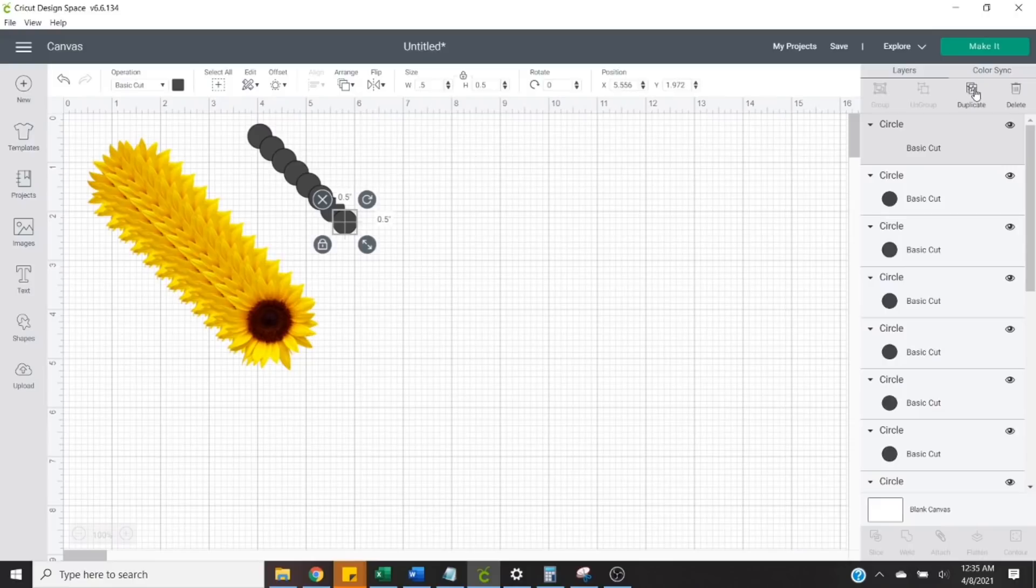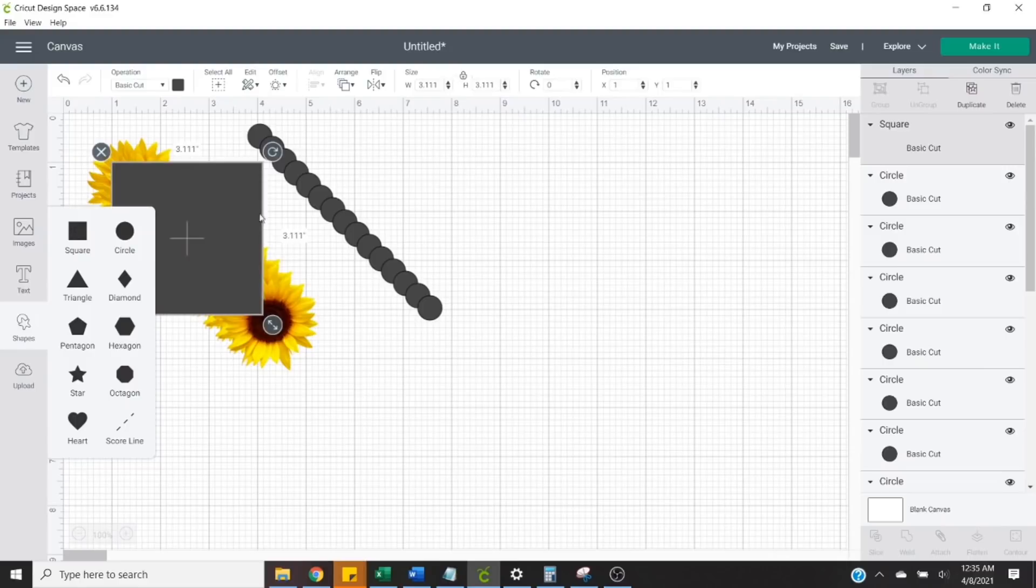I sized my polka dots at a half inch each and then I duplicated them to create about 12 again. I'm also going to show you guys how I created the vinyl lines, which is pretty straightforward. You just select a square from the shapes feature and then resize that square.